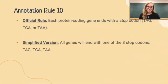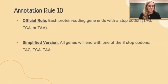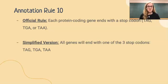The tenth rule of annotation is that all genes will end with one of three stop codons: TAG, TGA, or TAA. Something to remember about stop codons is that they only code for stops — and we'll learn why that is important in just a moment.